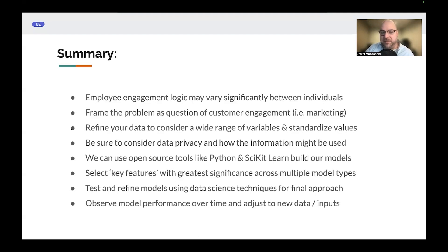And so then we can use open source tools like Python, scikit-learn to build out our models. We would select the key features which are the greatest significance to be predicting whether or not somebody is likely to leave or not. We would then test and refine the model using data science techniques and come up with a final approach. And then over time, probably observe our model because things will change. The data inputs are going to be different and we might need to adjust our approach. Maybe in the end, what I've found is that you're not going to necessarily give an individual index for each person over time.